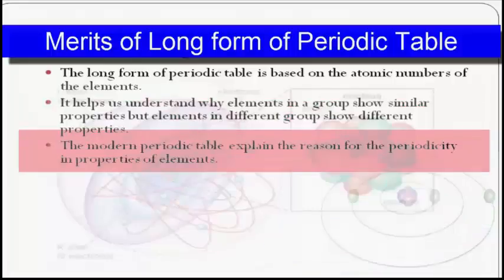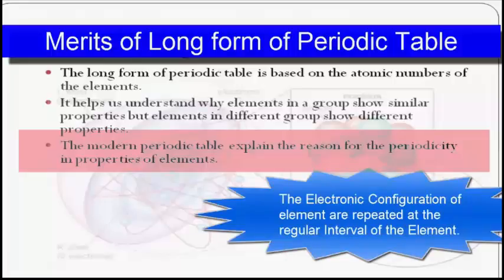The third merit is that the modern periodic table explains the reason for the periodicity in properties of elements. The long form of the table relates the periodicity in properties of elements to the periodicity in their electronic configuration, stating that electronic configurations of elements are repeated at regular intervals. In comparison, Mendeleev's periodic table does not give any reason for the periodicity in properties of elements.